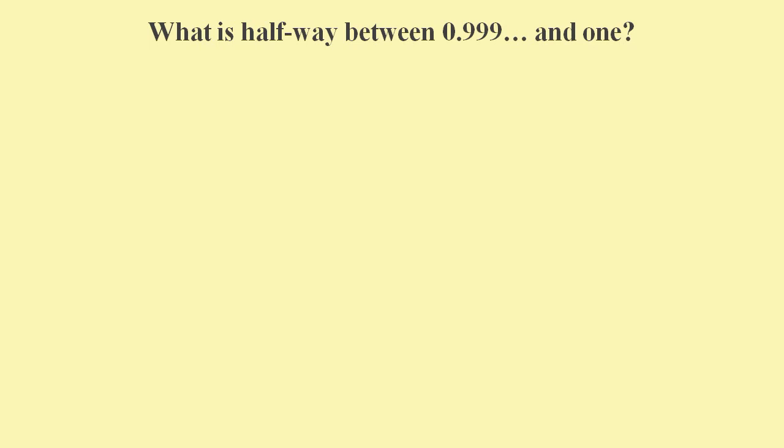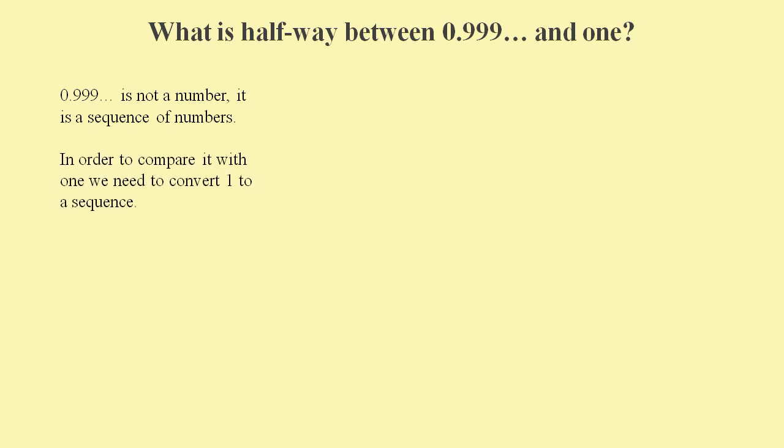Similarly, we could ask, what is halfway between 0.9 recurring and 1? Again, 0.9 recurring is not a single number, it is a sequence of numbers. And so we need to work with sequences or series or nth sum expressions.